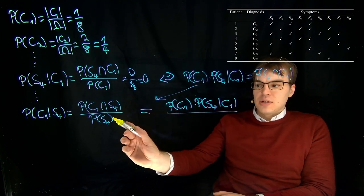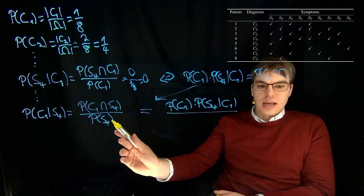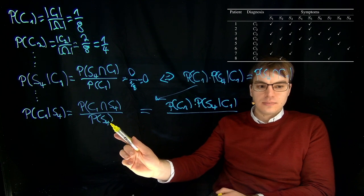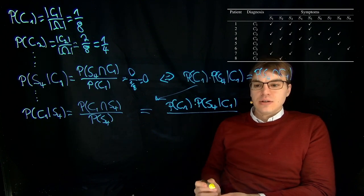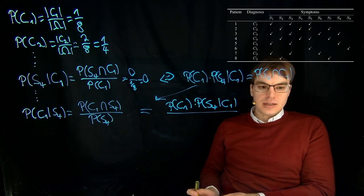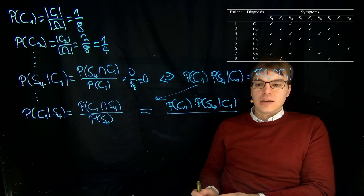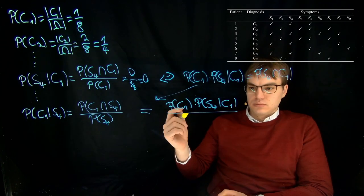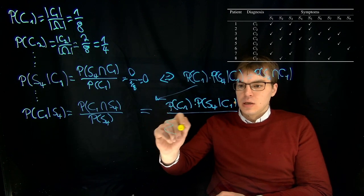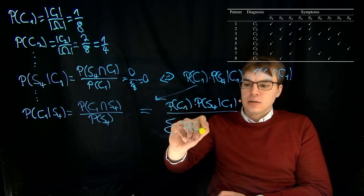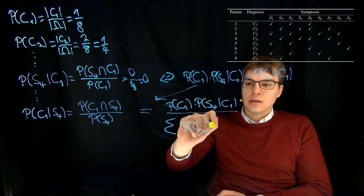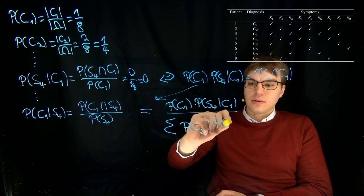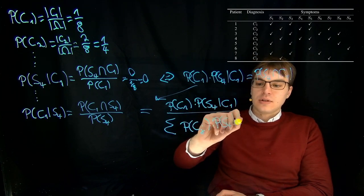But what we can do here is apply total probability, which means that we can sum up our terms P(C_j) times probability S4 under the condition of C_j.